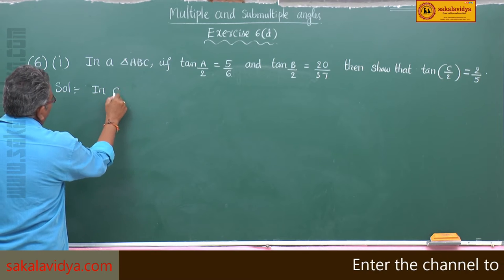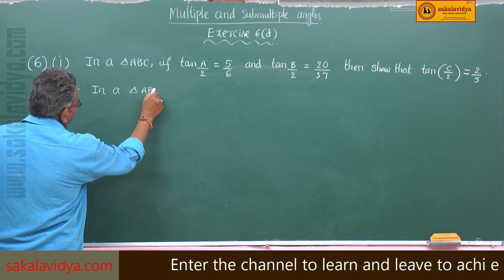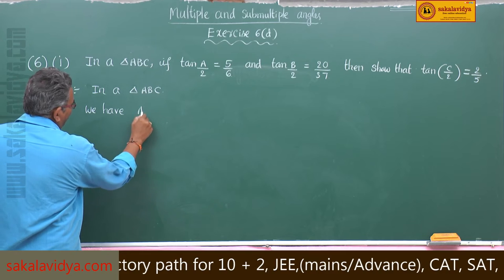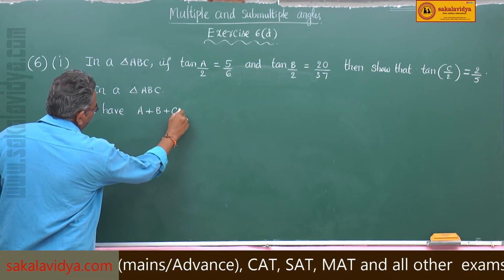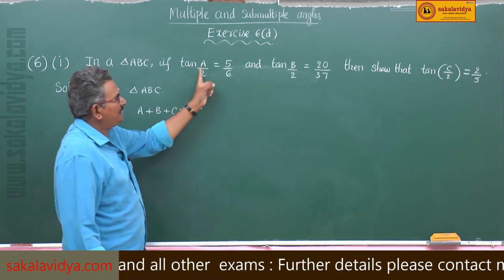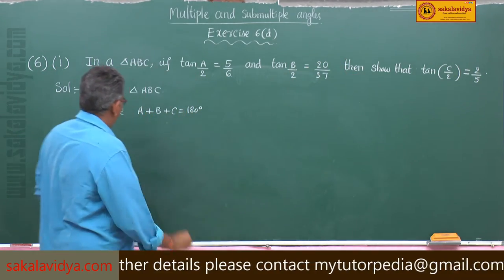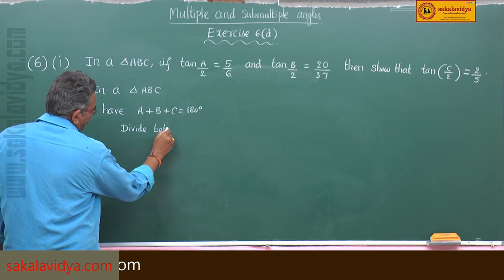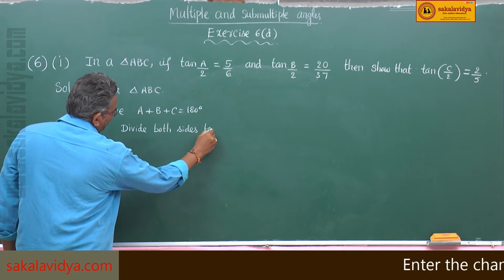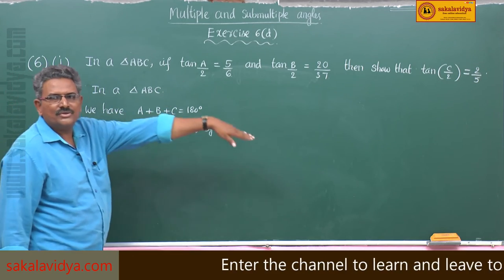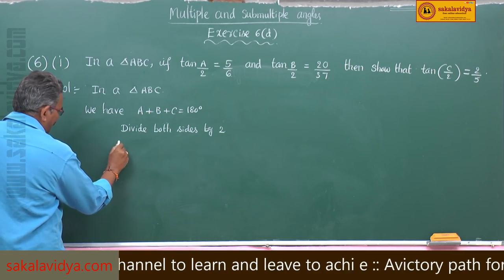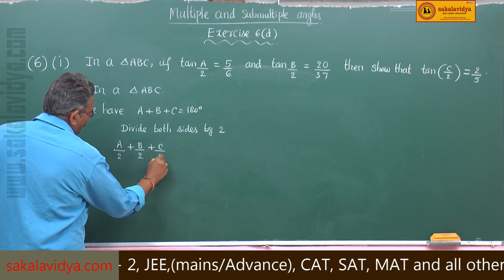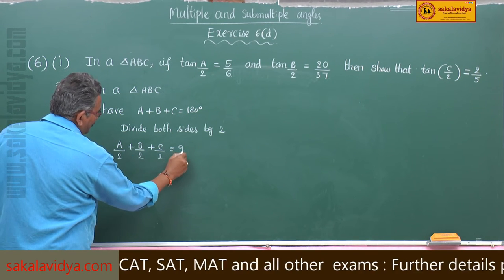In a triangle ABC, we have A plus B plus C is equal to 180 degrees. But here we require A by 2, B by 2 and C by 2. So divide both sides by 2. We get A by 2 plus B by 2 plus C by 2 equals to 90 degrees.